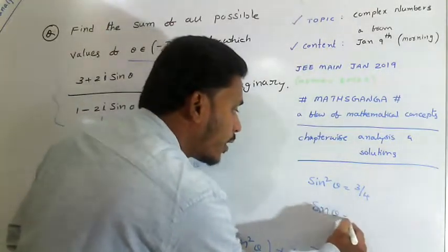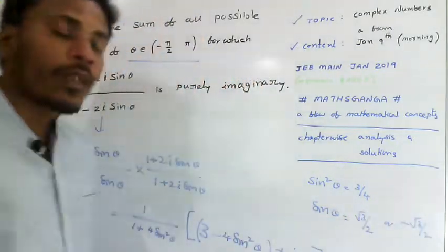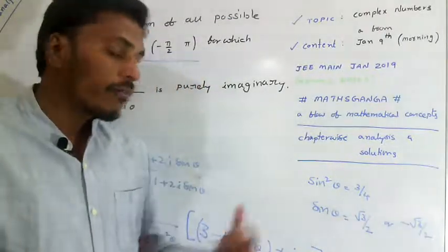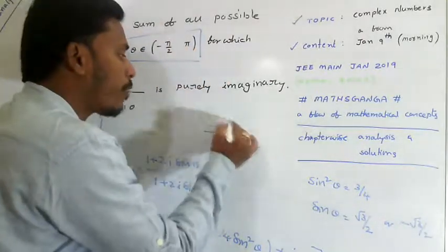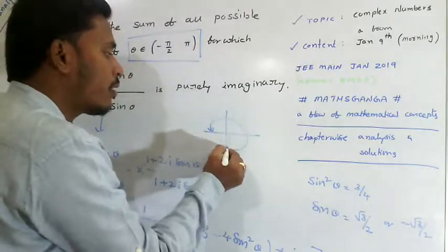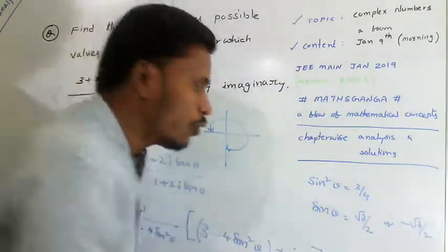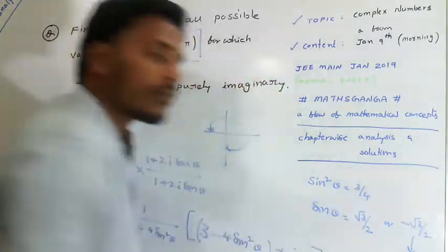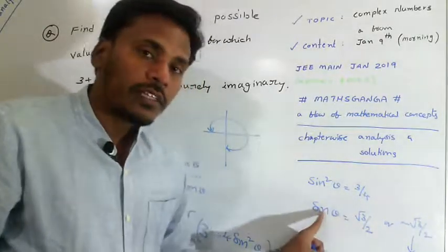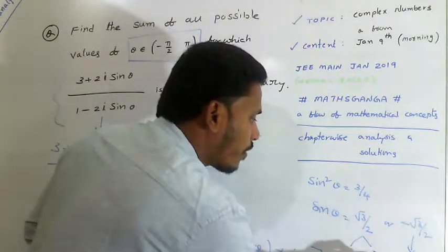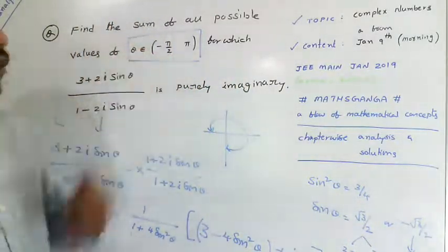Therefore sinθ = √3/2 or -√3/2. We need to find values of theta in the range -5π/2 to π. In the fourth quadrant, sinθ is negative, so sinθ = -√3/2 gives θ = -π/3. For positive sinθ, in the first quadrant θ = π/3 and in the second quadrant θ = 2π/3.